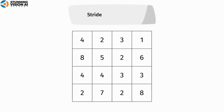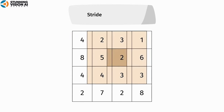Next is the stride. The stride is defined as the displacement distance during the convolution process. The larger the stride, the smaller the resulting output. Convolution with stride 1 is demonstrated in this example.